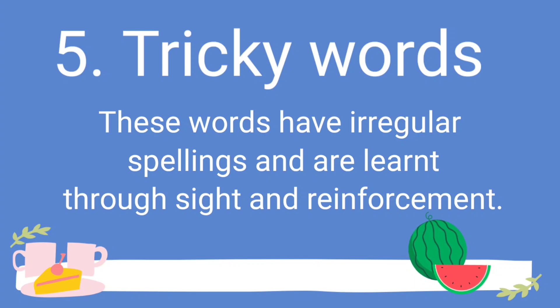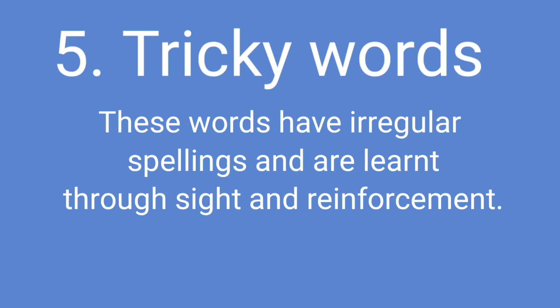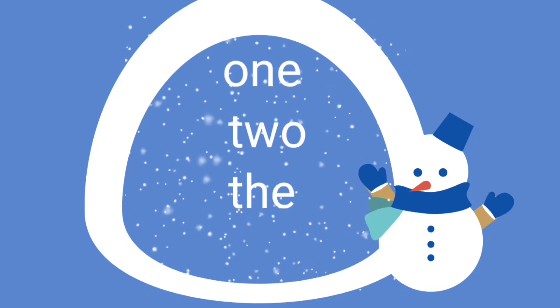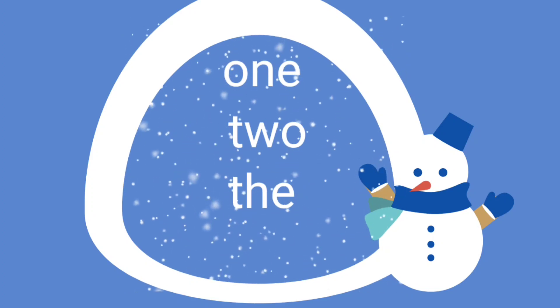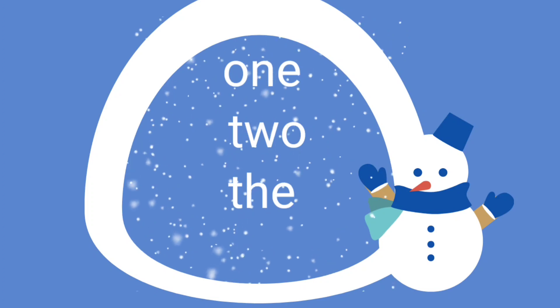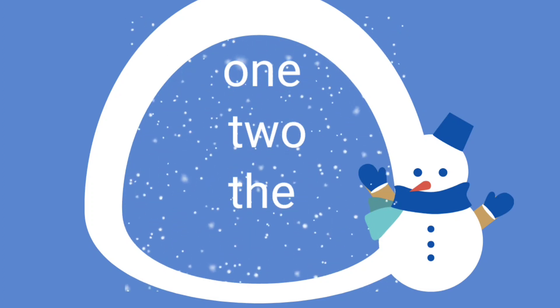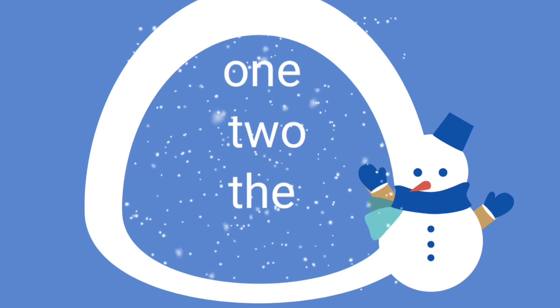The last skill taught in Jolly Phonics is tricky words. Tricky words are words which have irregular spellings and the child cannot use the segmenting or blending technique to form them. For example, in the words 'one' or 'two', the child cannot use segmenting and blending — he has to recognize the words by sight. The teacher can show a flashcard or write the word on the board, and the child learns or memorizes it through reinforcement.